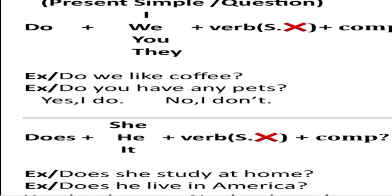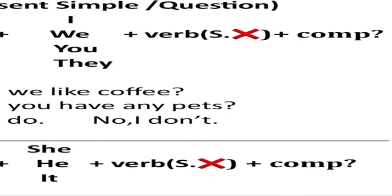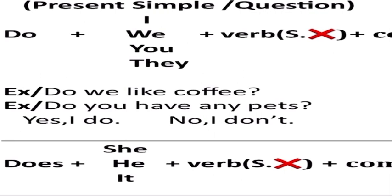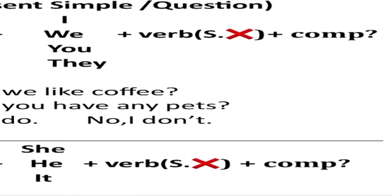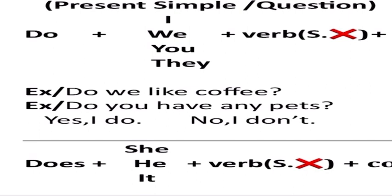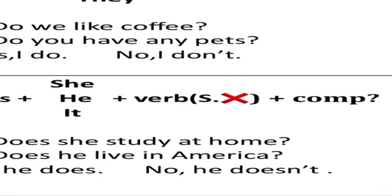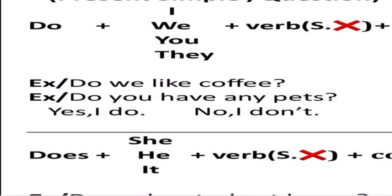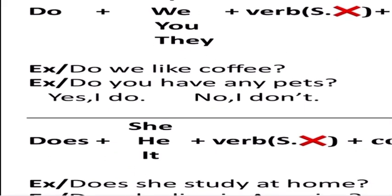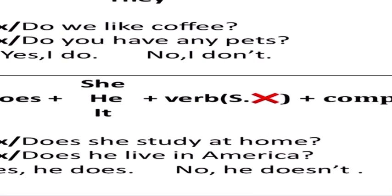For the question form of Present Simple, we use 'do' and 'does' at the beginning of the sentence. We have: do + I/we/you/they + verb without 's' + complement + question mark. For example: 'do we like coffee?', 'do you have any pets?' — yes, I do / no, I don't. 'Does' is used with he, she, it and the verb does not take 's'. For example: 'does she study at home?', 'does he live in America?'